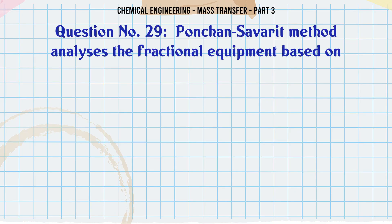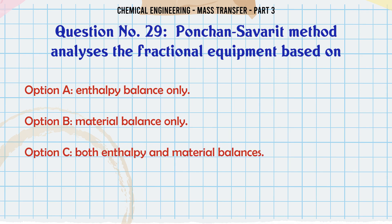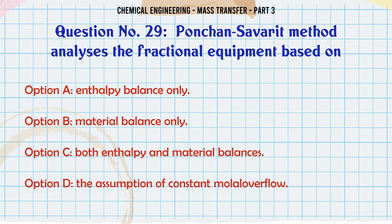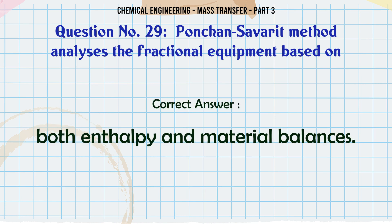Ponchon-Savarit method analyzes fractional distillation equipment based on: A) enthalpy balance only, B) material balance only, C) both enthalpy and material balances, D) the assumption of constant molar overflow. The correct answer is: both enthalpy and material balances.